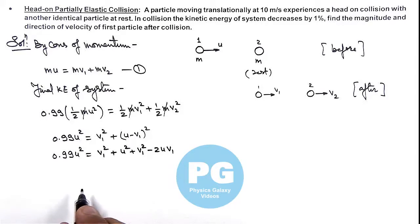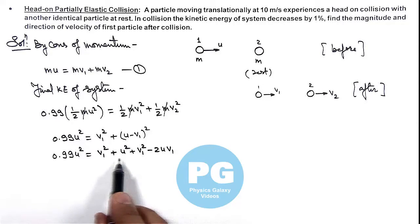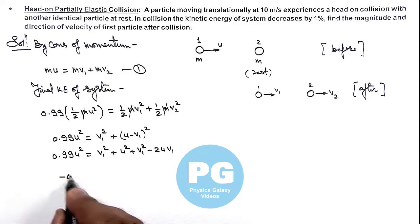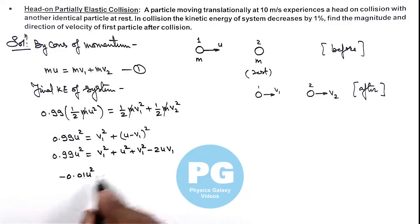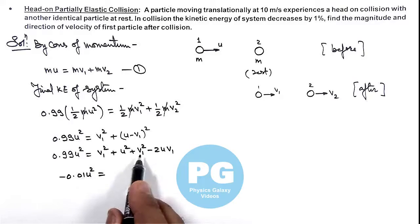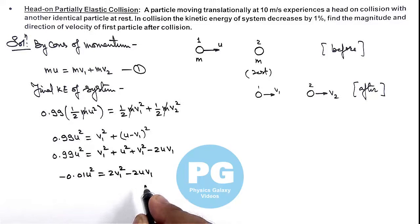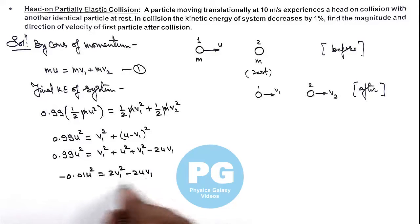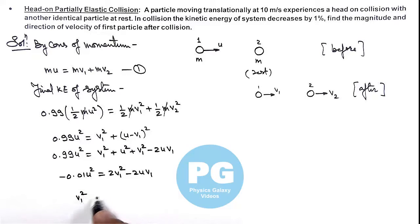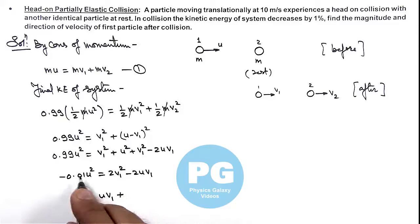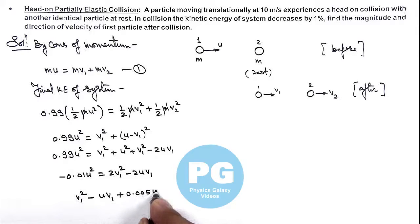Simplifying further, the final result we obtain is: −0.01·u² = 2·v1² − 2·u·v1. This is a quadratic in v1. Rearranging these terms we can write it as: v1² − u·v1 + 0.005·u² = 0.